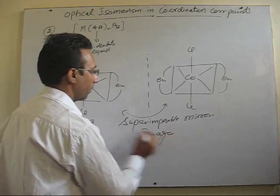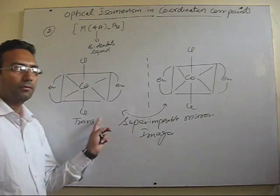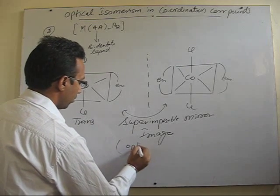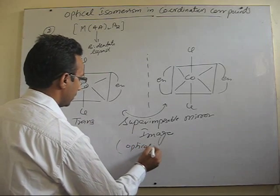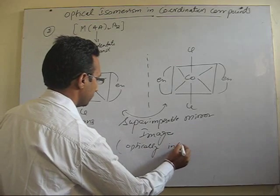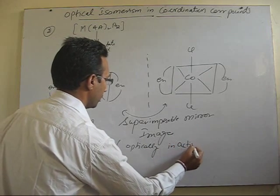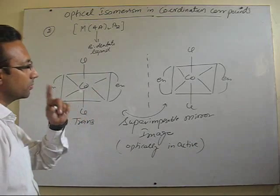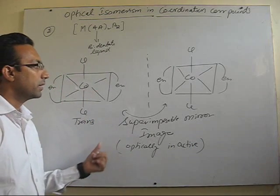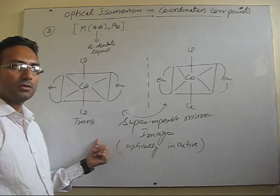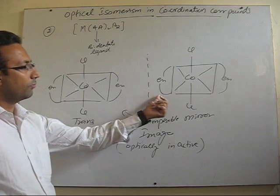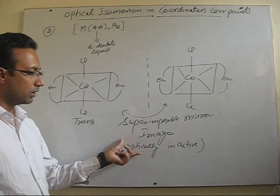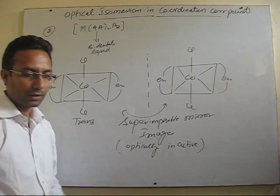So this particular isomer, that is trans, forms superimposable mirror images. We are finding here that trans isomers, due to the presence of symmetry in them, do not form non-superimposable mirror images. So usually they are optically inactive.